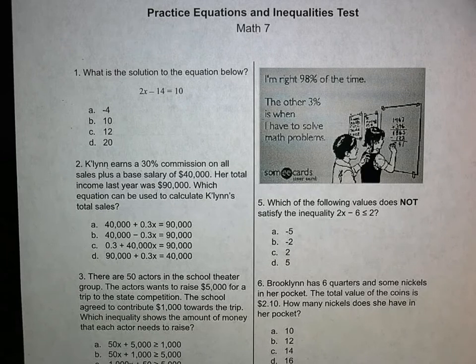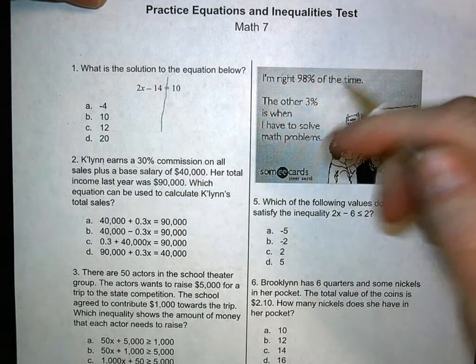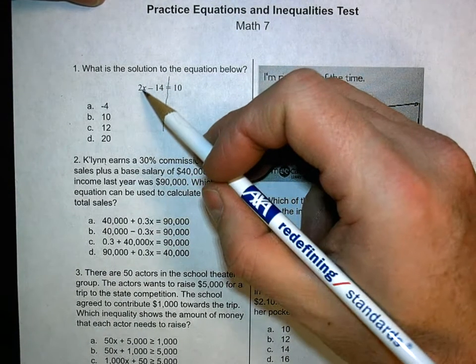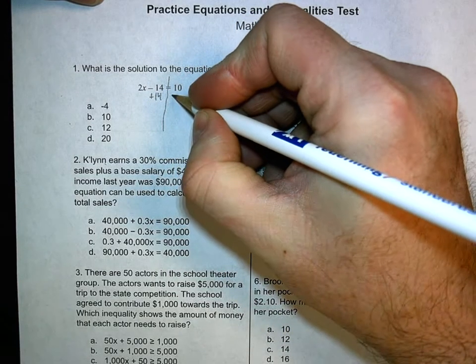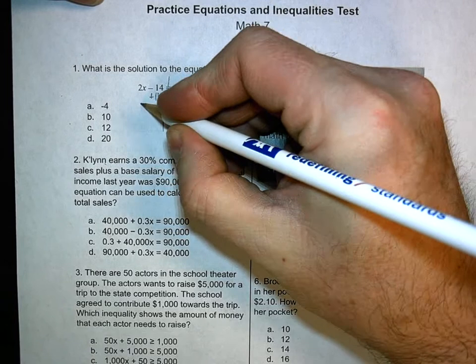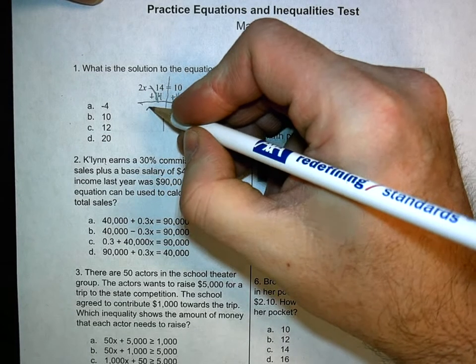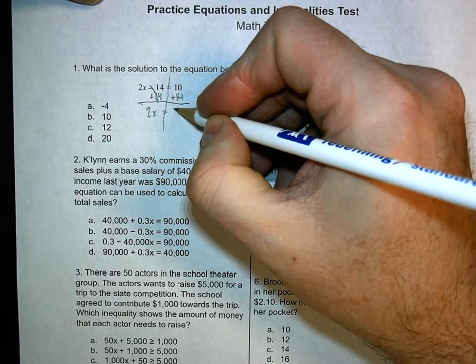It says, what's the solution to the equation below? So here we've got an equation. First step in equations, we're going to draw a line to separate the right and left. Then we're going to look for what's being added or subtracted to the number with the variable. We've got a negative 14 and the opposite of that is 14. So we add 14 to both sides. If you do it to one side of the equation, you've got to do it to the other. So this becomes zero. We bring down our 2x and our equals. 10 plus 14 is 24.